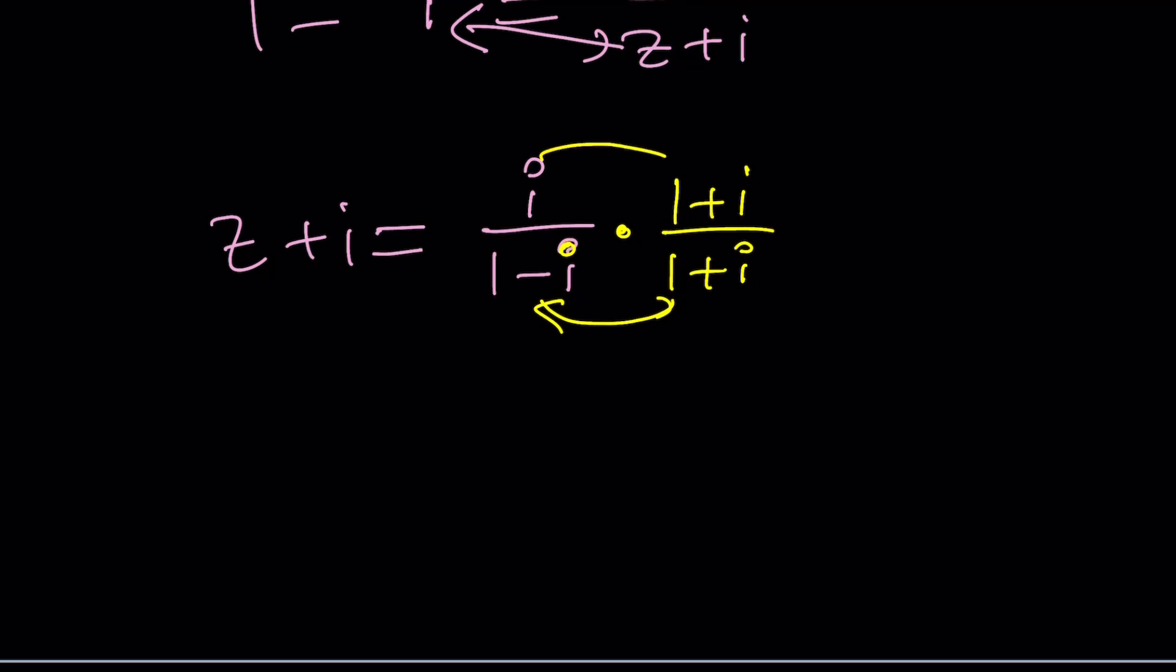So now if you distribute, you're going to get I plus I squared. And from the product of two conjugates, we get sum of two squares, A squared plus B squared. Remember that formula or identity? That gives us one plus one, which is two. Easy, right?